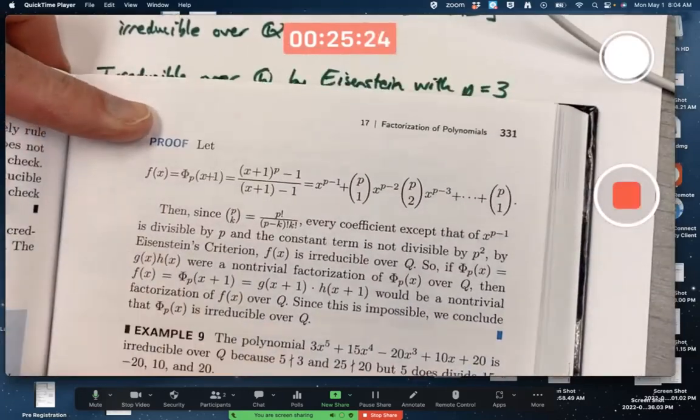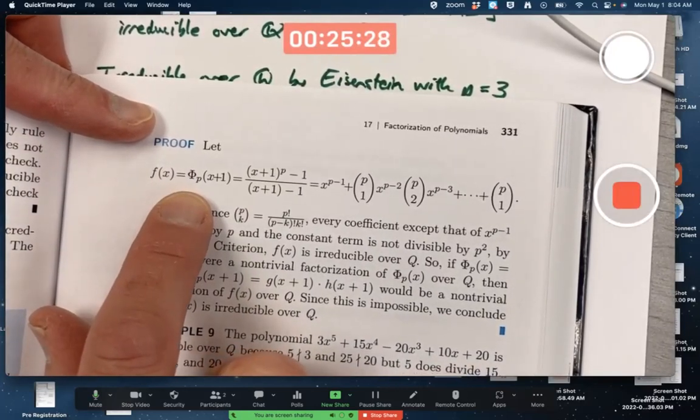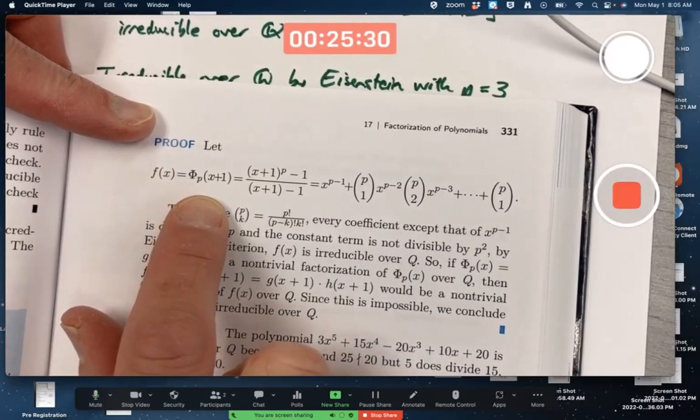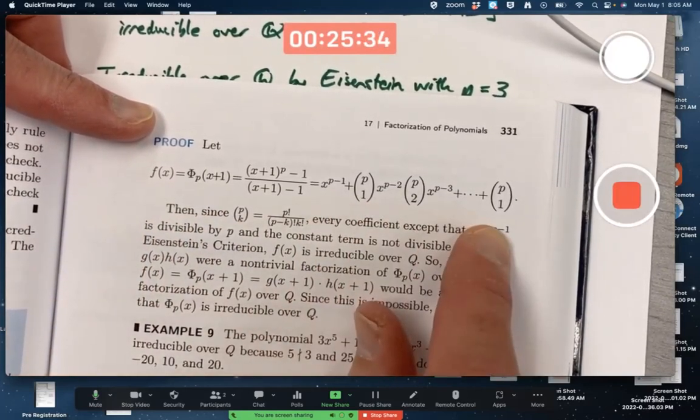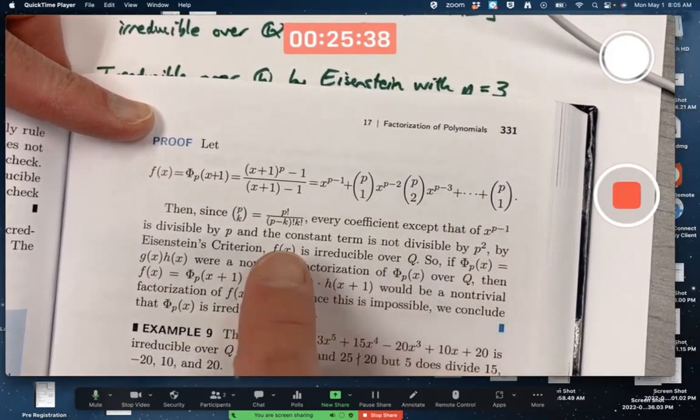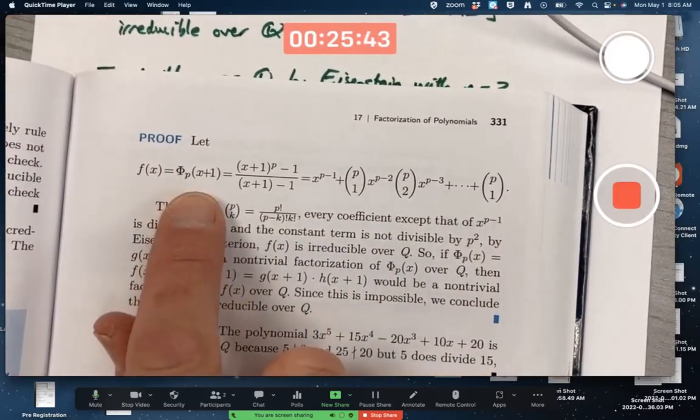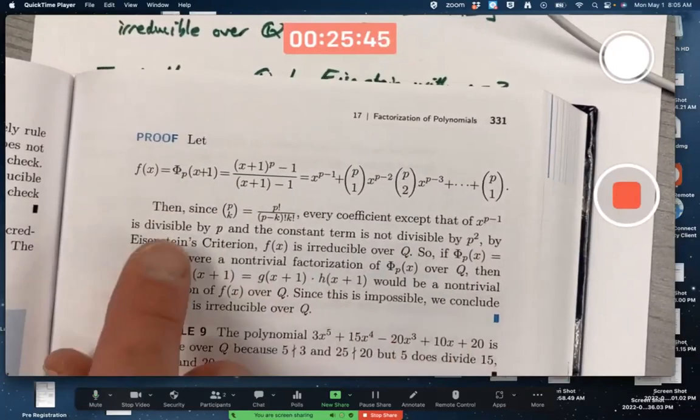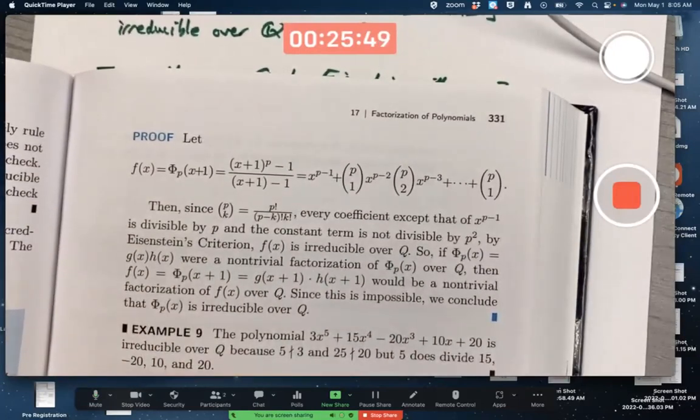Instead of showing f of x, or the polynomial capital phi is irreducible directly, you show capital phi of x plus 1 is irreducible. And these coefficients satisfy the condition of Eisenstein's criterion with p equal to the prime that you're thinking about. And if you can show this is irreducible, it also is easy to show that capital phi of x, the cyclotomic polynomial itself, is also irreducible.